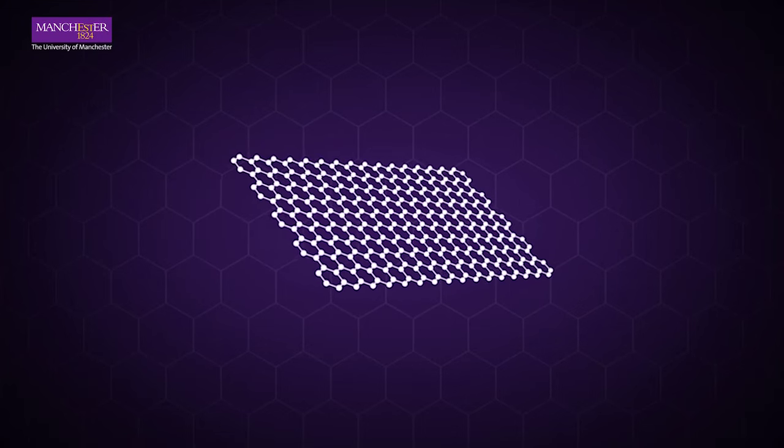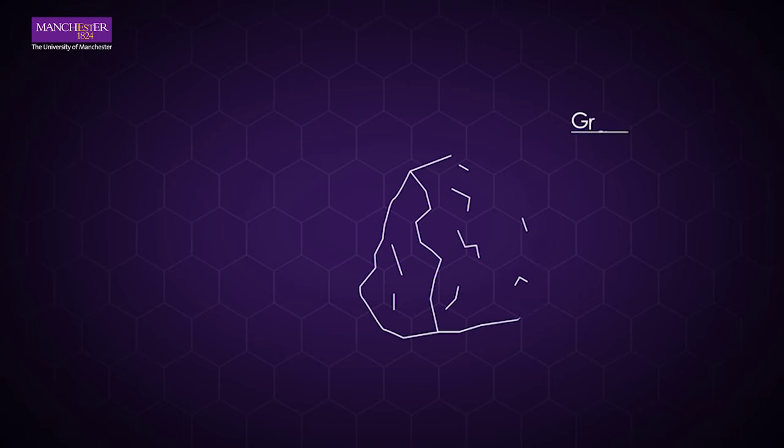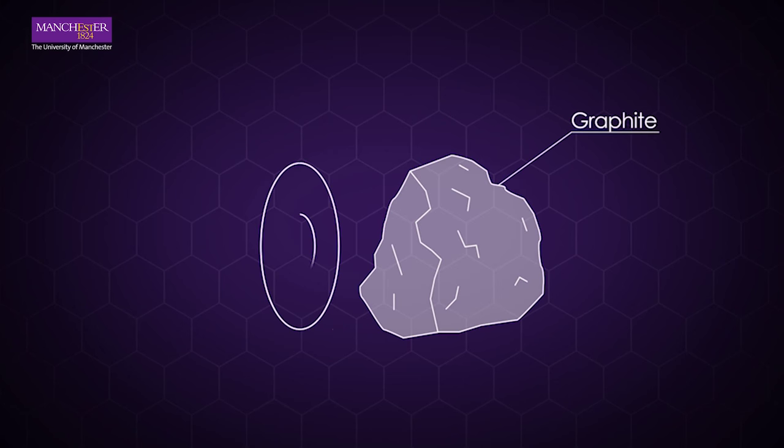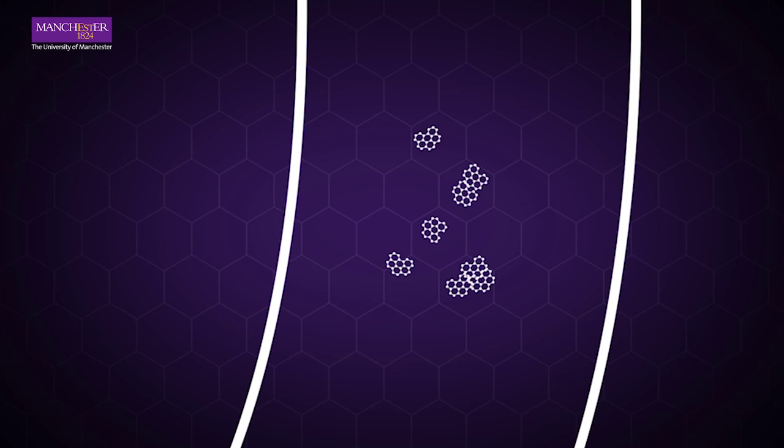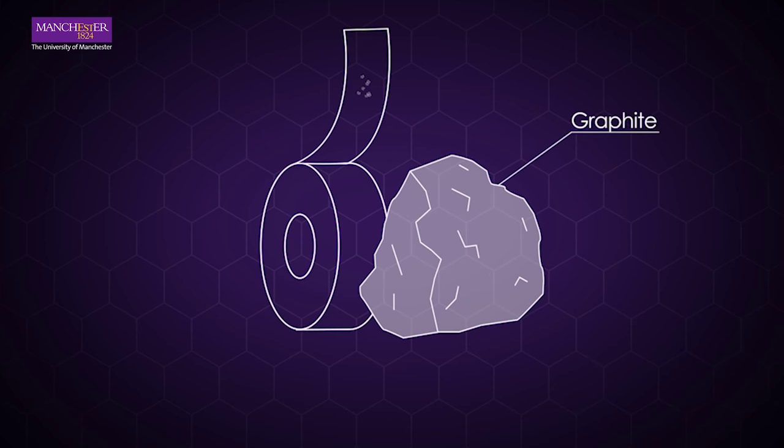Graphene is a single atomic layer of graphite, so the most simple and elegant way to make graphene is to take a rock of graphite and use some sticky tape like sellotape to peel away a single layer of graphene from it.